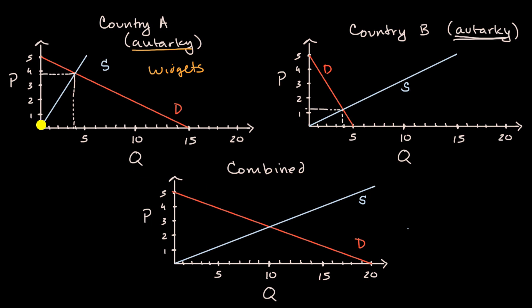At a price of zero, Country A's market is demanding 15, and Country B's demanding five, so in aggregate they're demanding 20. Similarly with supply, at a price of five, Country A will supply five, and at a price of five, Country B will supply 15, so together they will supply 20 units per time period.